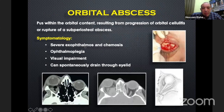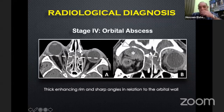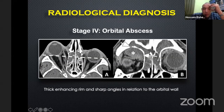Orbital abscess is more dangerous — pus within the orbital contents resulting from progression of infection. It causes severe exophthalmos, chemosis, ophthalmoplegia, visual impairment, and can spontaneously drain through the eyelid. On CT, there is severe proptosis, and the key differentiator from subperiosteal abscess is the angle between the orbital wall and the abscess: subperiosteal shows an obtuse angle, while orbital abscess shows a sharp angle.